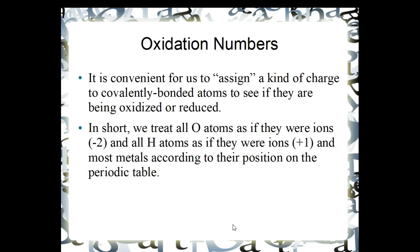We treat most metals according to their position on the periodic table. So sodium would be plus one, calcium would be plus two, aluminum plus three. For example, sodium is always plus one, fluorine or fluoride is always minus one.